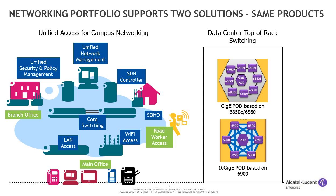All of the components listed on the left-hand side of the chart are covered by the portfolio. On the right-hand side, the same products can also be put together to construct a data center top-of-rack switching solution. This is a relatively new area for Alcatel-Lucent Enterprise. We hit the market hard in 2012 with what we call the pod mesh architecture, and it won Best of Show at Interop in 2012.